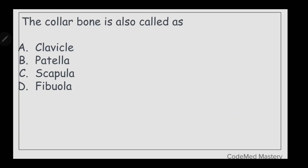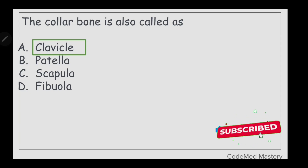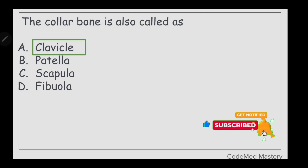Next question: the collar bone is also called — option A: clavicle, option B: patella, option C: scapula, option D: fibula. The right answer is option A, clavicle. These are the important practice questions related to anatomy and medical terminology. Don't forget to subscribe to the channel for more updates related to the CPC exam.